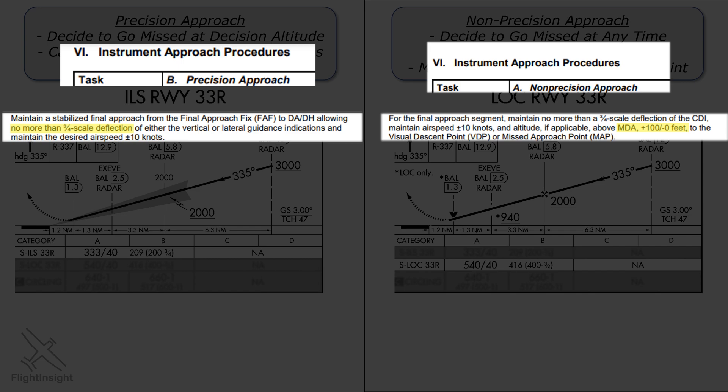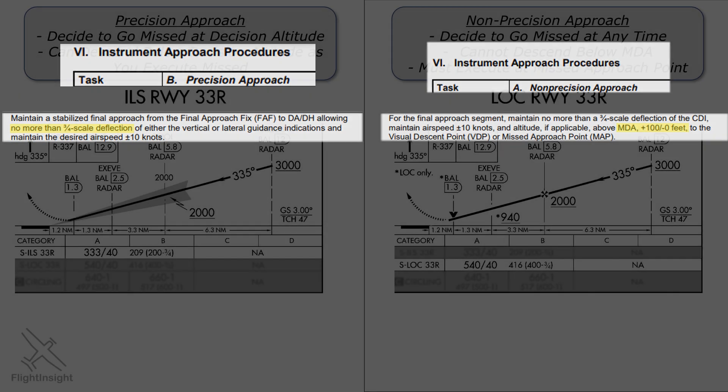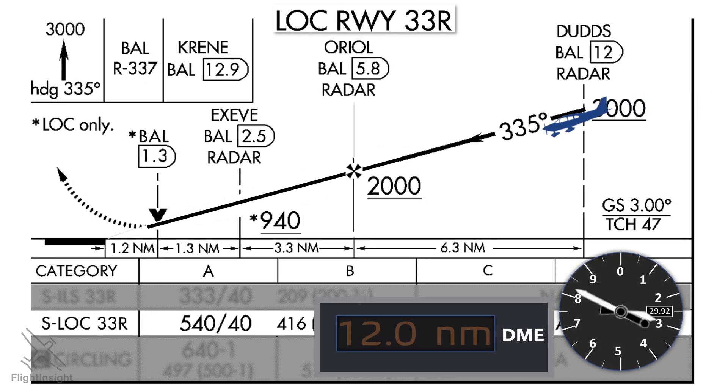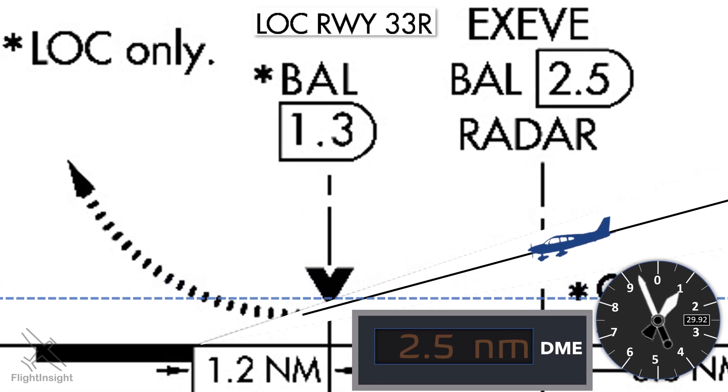This is a very common item that gives instrument students trouble, so the best antidote I have is to make sure you're clear about the difference between the decision altitude and the minimum descent altitude. And I actually incorporate this piece into my brief, so I'm ready to fly the approach the way it's supposed to be flown. So if it's the localizer approach, I'll say for example, this is a non-precision approach, which means I'll start the final approach at ORIOL and descend down to 540 feet, which is the MDA.